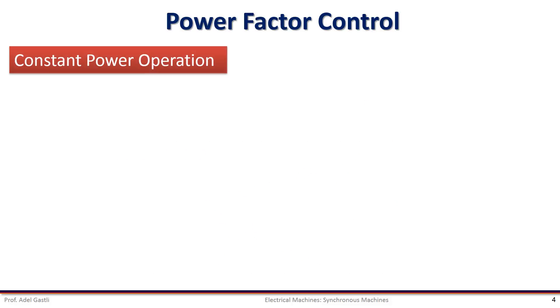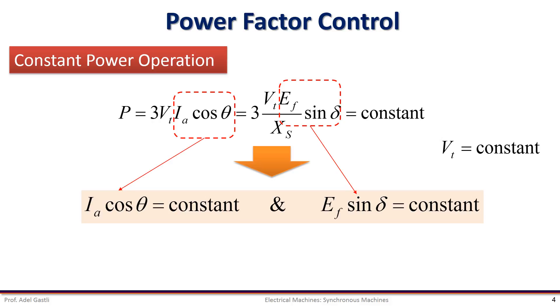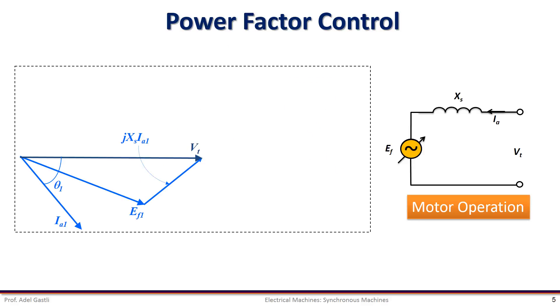Let's assume that the synchronous motor is operating under constant power. We know that the power equation is given as shown here. Since the machine is connected to an infinite bus, then we can consider that the terminal voltage Vt is also constant. Therefore, the product Ia cosine theta and Ef sine delta are also constant for constant power operation.